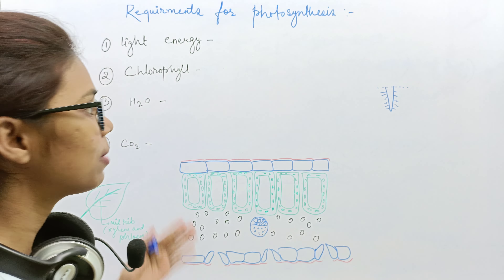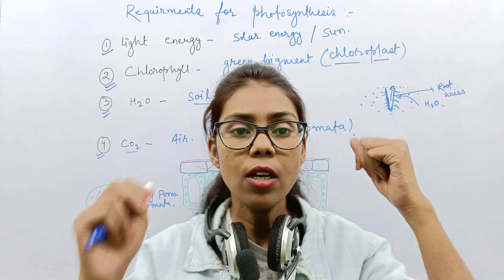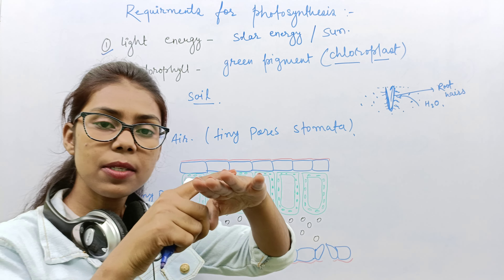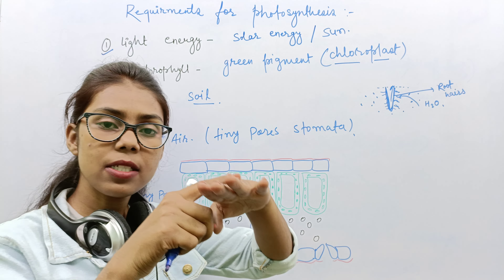Let us look at a cross-section of a leaf to see what parts are present. First, the upper surface of the leaf is called the upper epidermis, and the lower surface is called the lower epidermis. Just like our body has skin, the plant body also has a layer called epidermis.